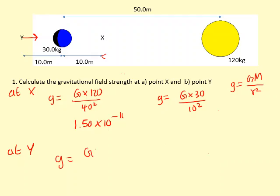Here it's going to be G where the mass of the blue is 30, over the distance from Y to the center of that, which is 10², which is actually the same as the one over here.